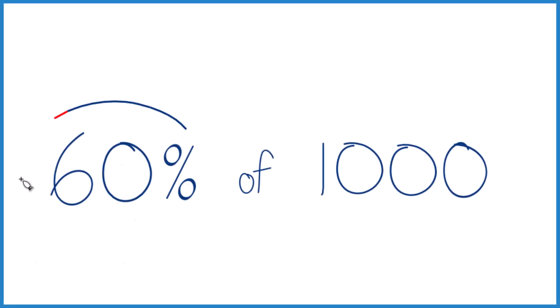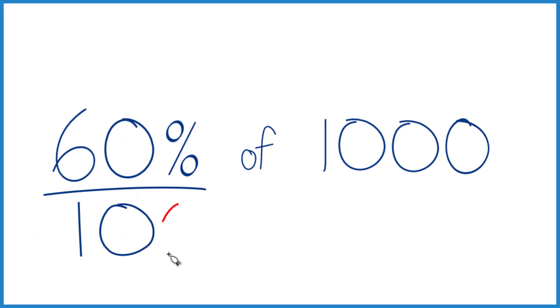Okay, let's take 60% of 1,000, and here's how you do it. I like to think of it this way. 60%, that's 60 over 100. Percent means per 100.